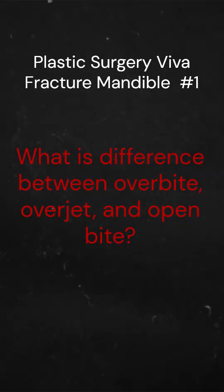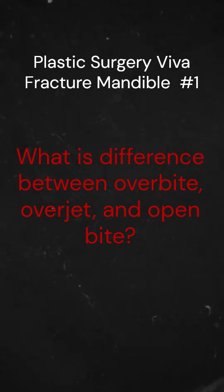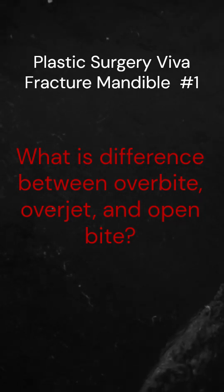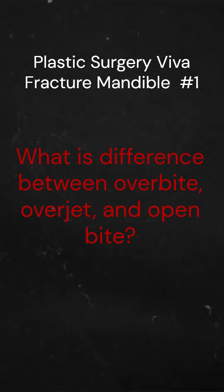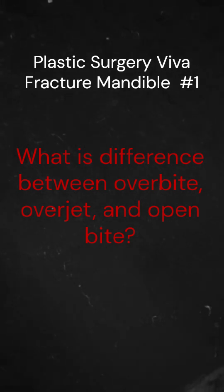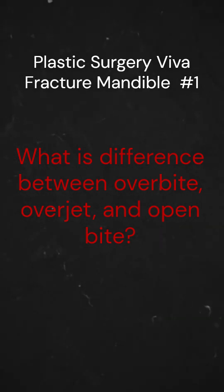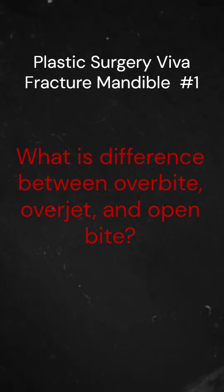What is the difference between overbite, overjet, and open bite? These three terms sound similar but define or describe different occlusal relationships. Overbite is the vertical overlap of the upper and the lower incisors — by how far the upper teeth cover the lower teeth. Overjet is the horizontal distance from the upper incisor edge to the labial surface of the lower incisor.